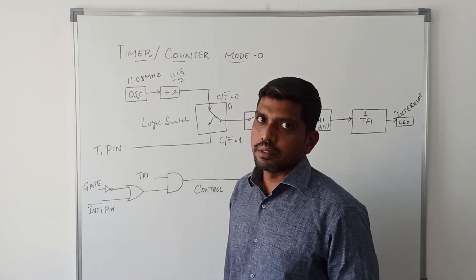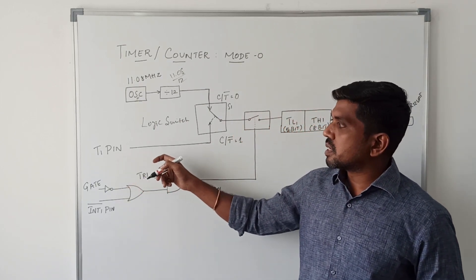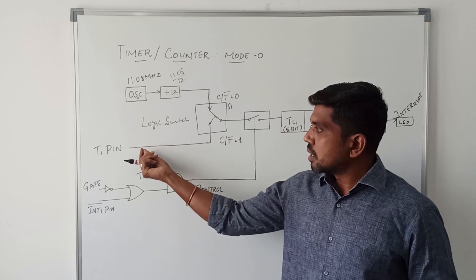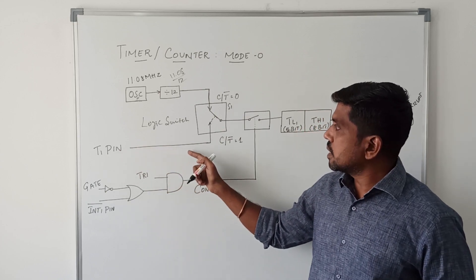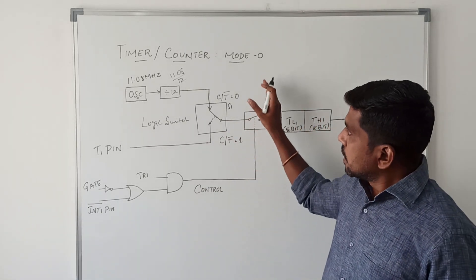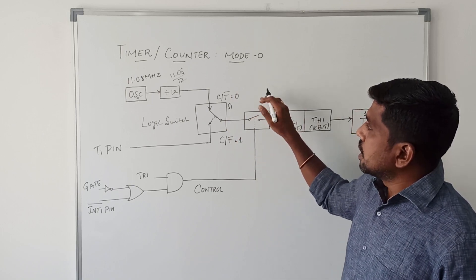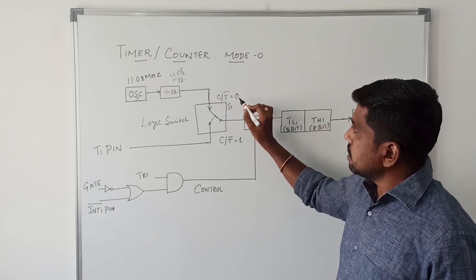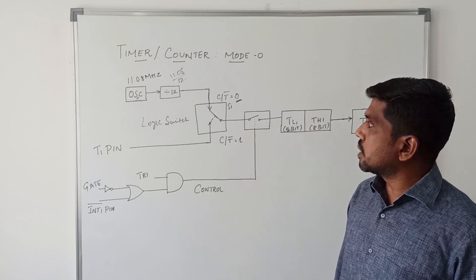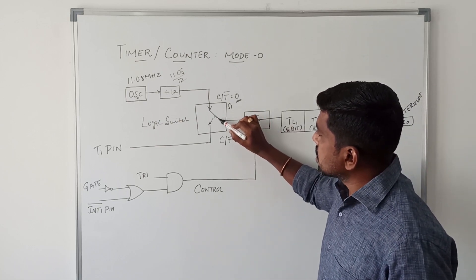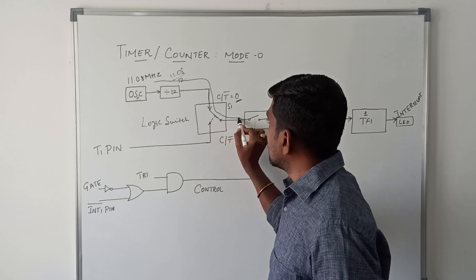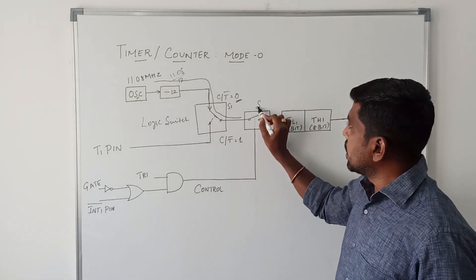When switch one is closed downwards, the input is taken from the T1 pin. This T1 pin receives input signals representing the number of external events outside the microcontroller. The signal is connected to the T1 pin, and the information is passed through these two switches and reaches the timer block. However, in this Mode Zero function, I consider the circuit operating in timer mode, so C̄/T̄ equals zero. Switch one is closed upwards and the frequency passes through this switch to reach the S2 switch.